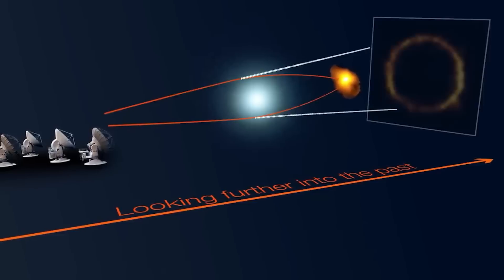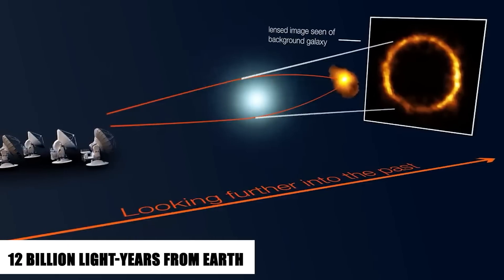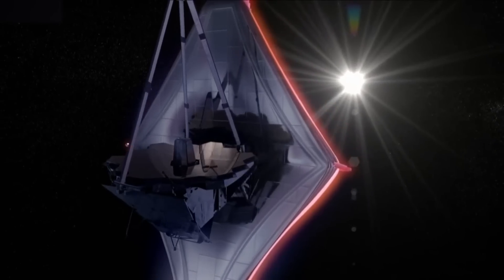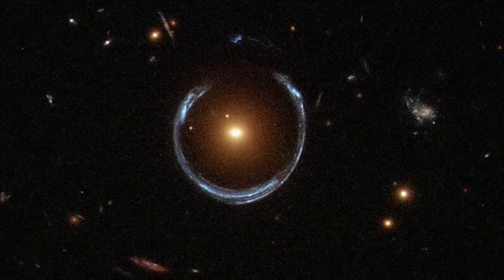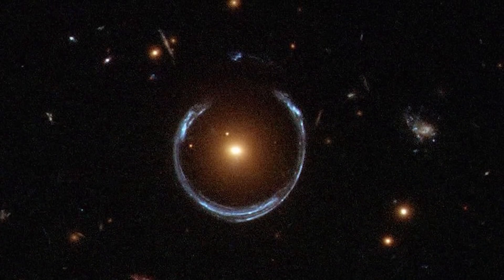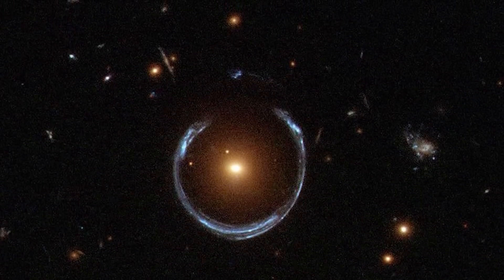Due to the fact that it is an extremely distant galaxy, approximately 12 billion light-years from Earth, the gravity of another galaxy in the foreground located between SPT-0418-47 and the Space Telescope causes the light from this galaxy to be bent and magnified, which results in the formation of a nearly perfect circle known as an Einstein ring.